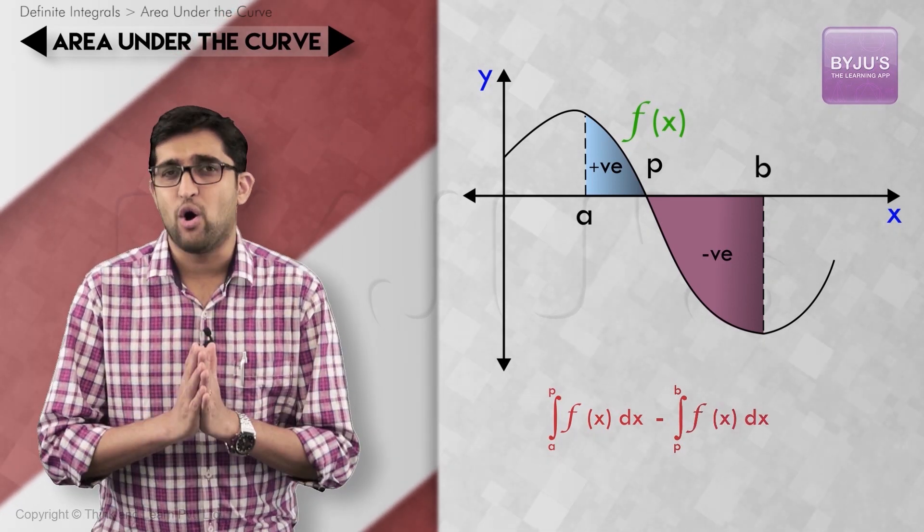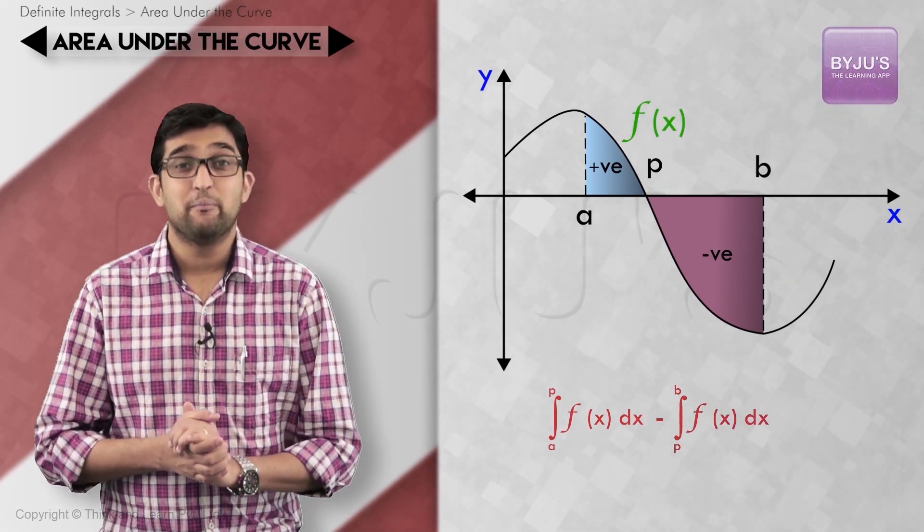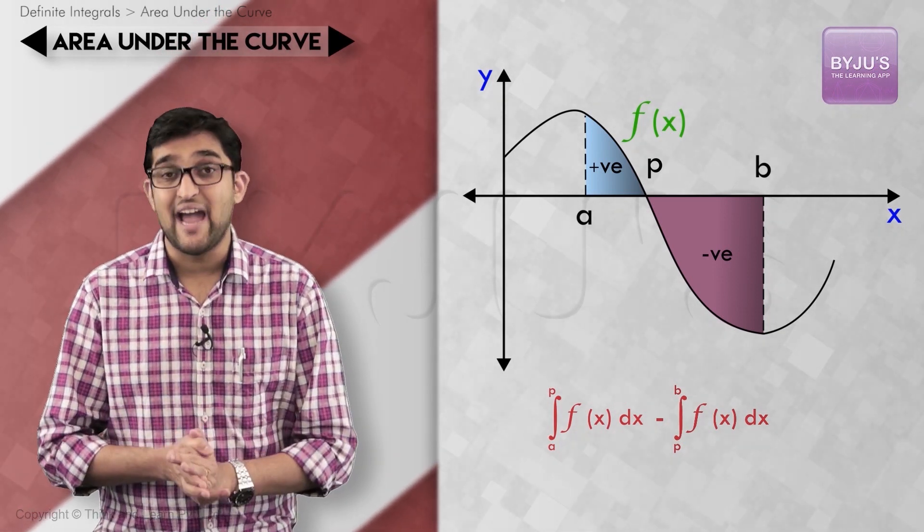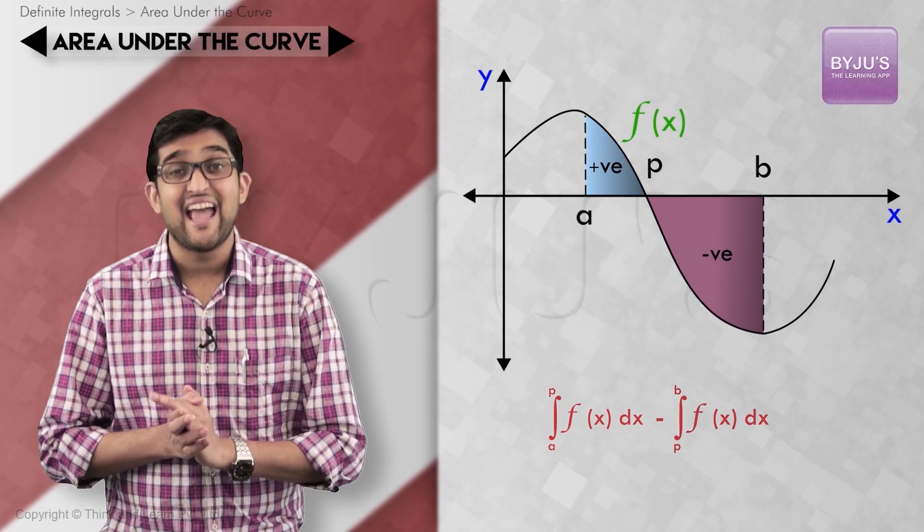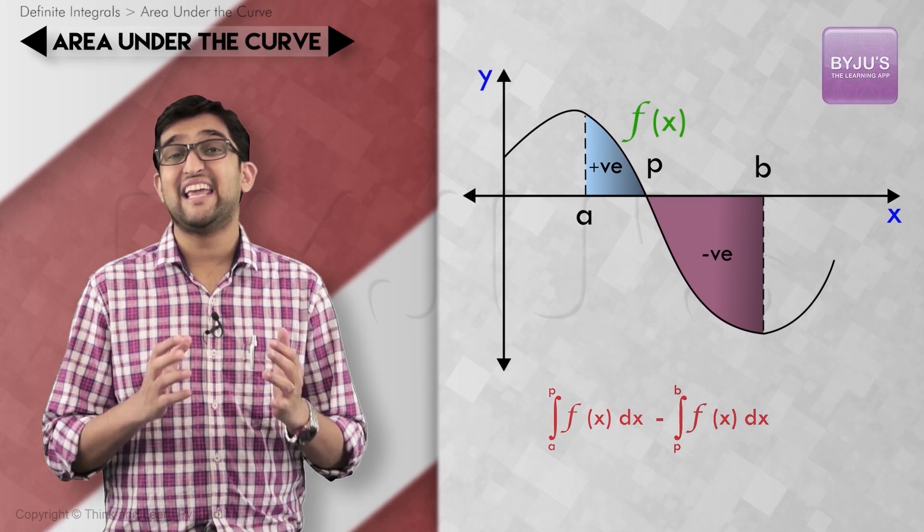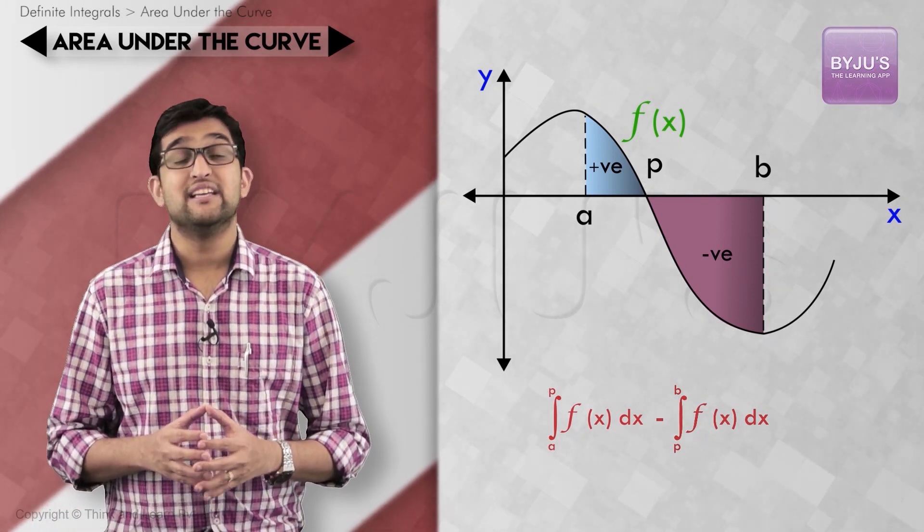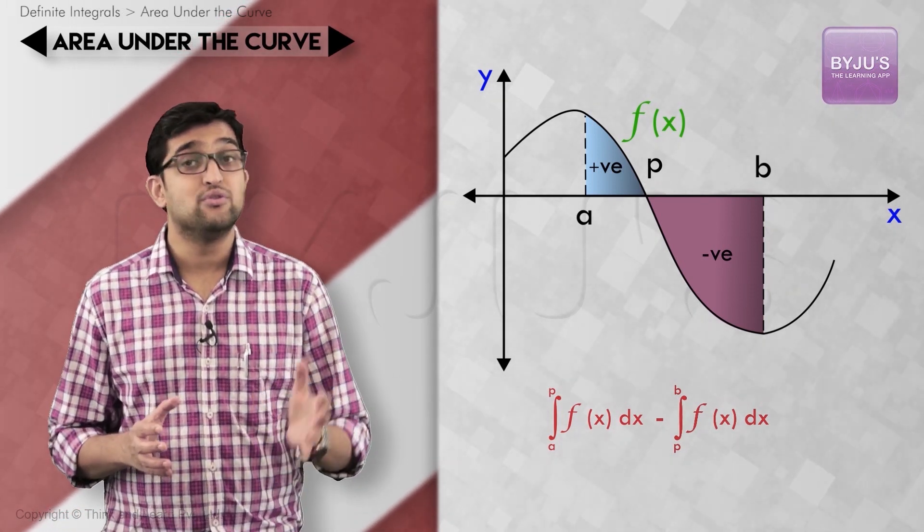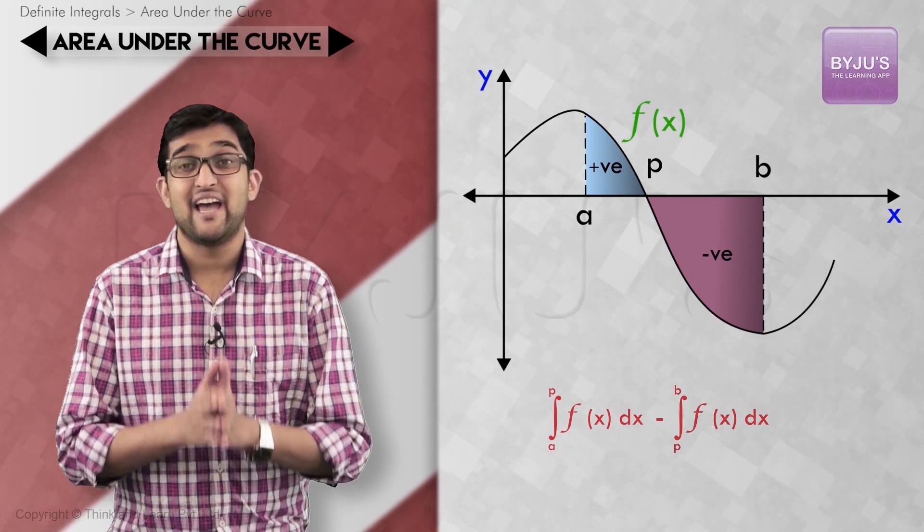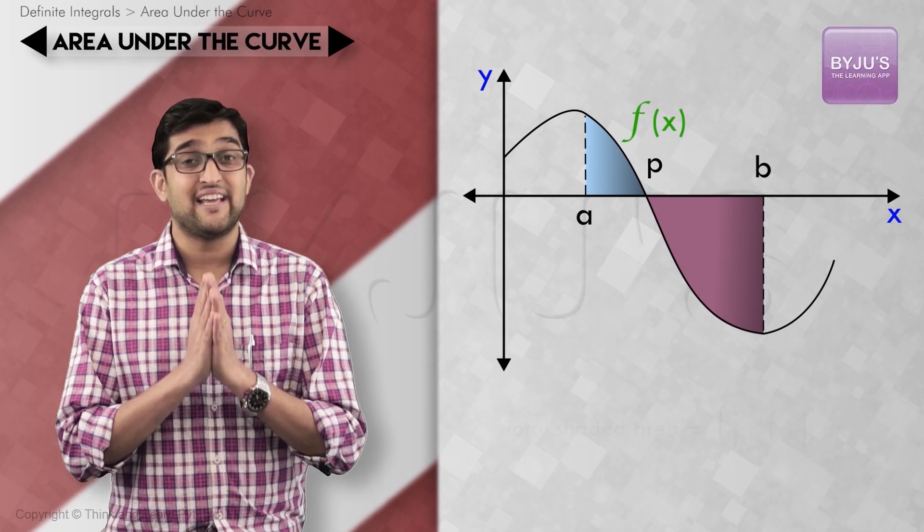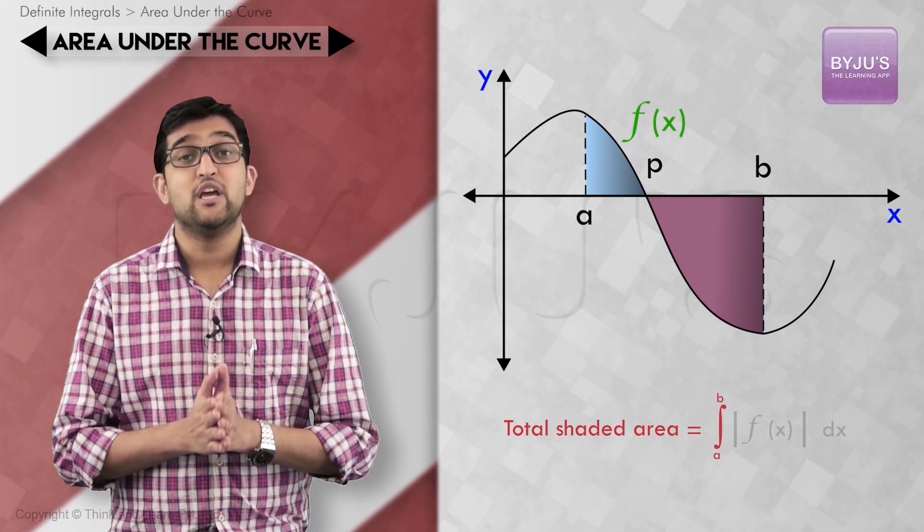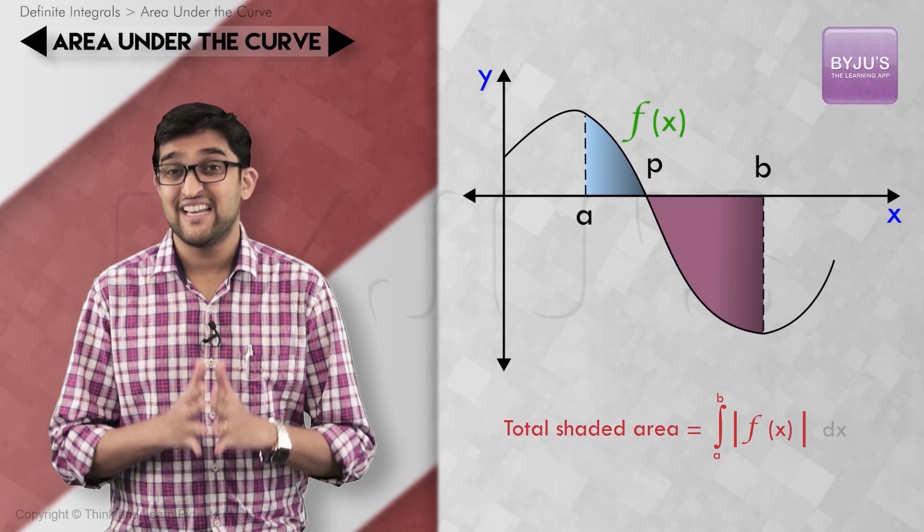What will be the general form for finding the area between the curve y equals f(x), x-axis and the abscissas a and b? Since we want the absolute area values for all area sections, it will be the sum of absolute value of areas of shaded regions or formally stating the expression: total area equals integral a to b modulus of f(x) dx.